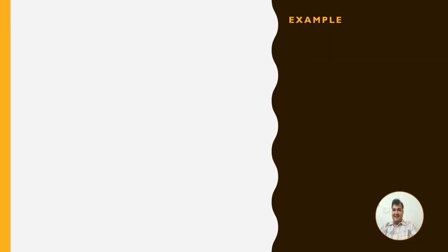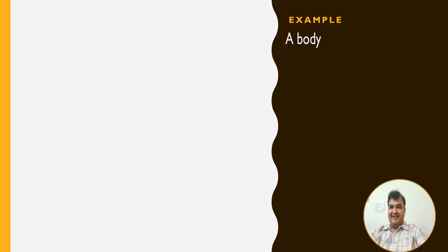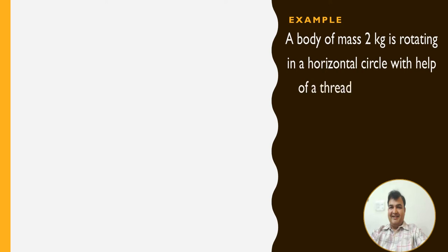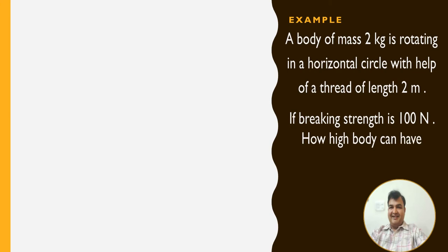Now we will take a numerical example on circular motion. A body of mass 2 kg is rotating in a horizontal circle with help of a thread of length 2 meters. If breaking strength is 100 Newton, how high can the body have linear speed?